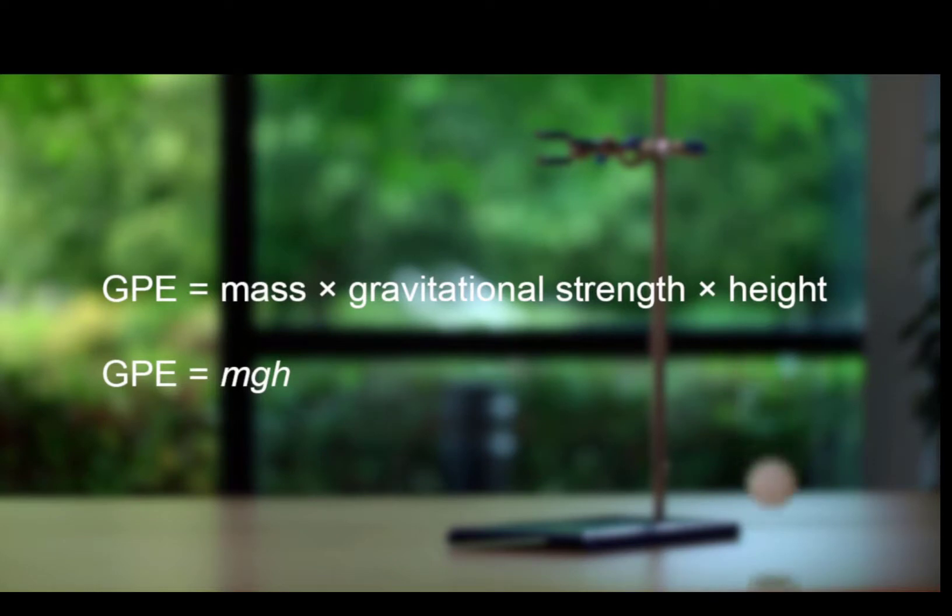The mechanical energy is the sum of the GPE and the KE. The GPE depends on mass, height, and the gravitational strength of the planet that the object is on. The KE depends on its mass and its speed.